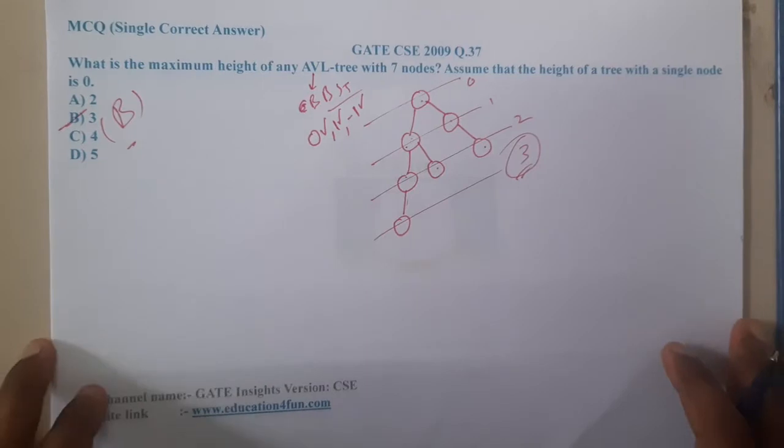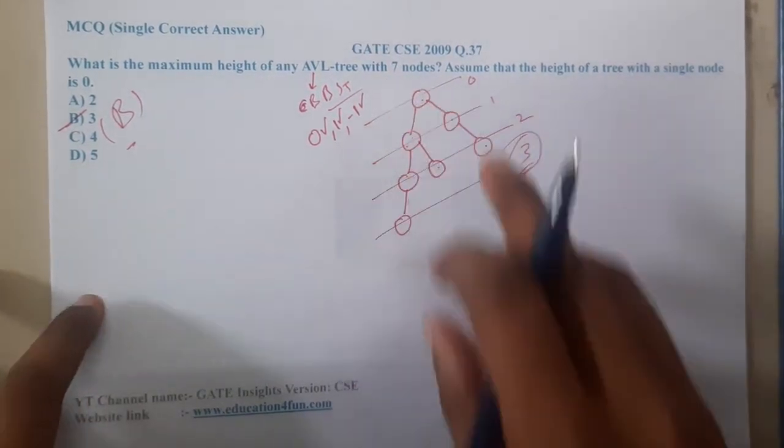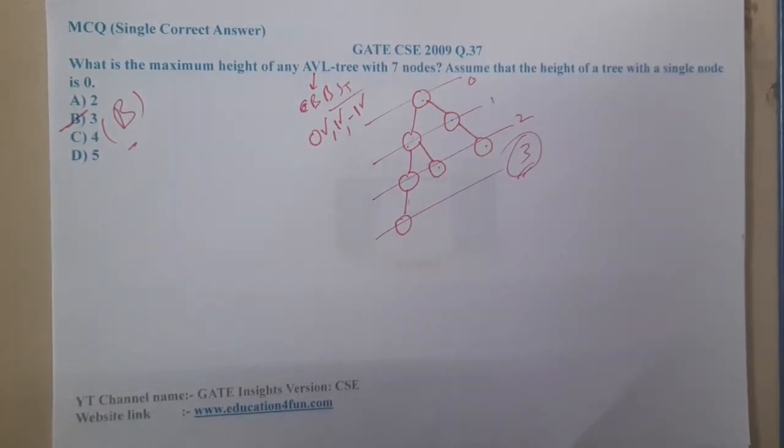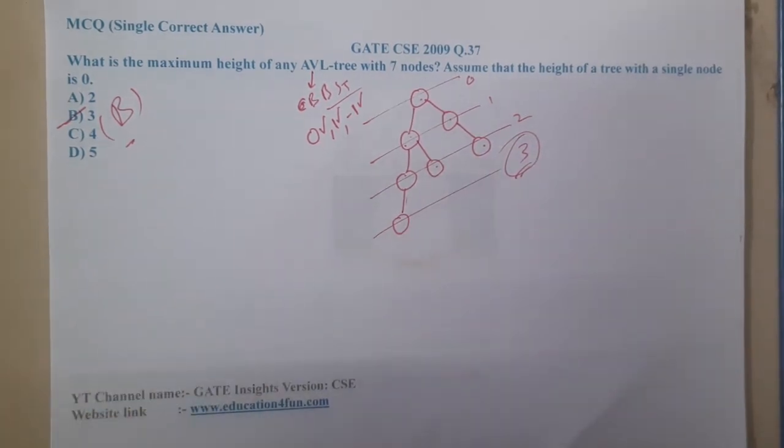Just observation - you started inserting the seven nodes while making sure that you are balancing the tree at every moment of time. Now you got an idea of how exactly we are doing it.